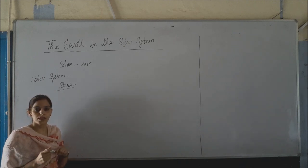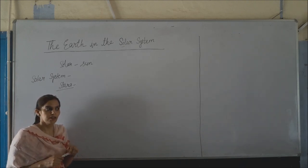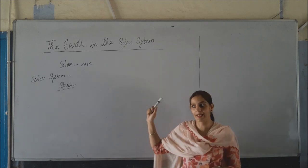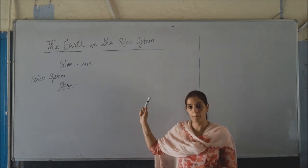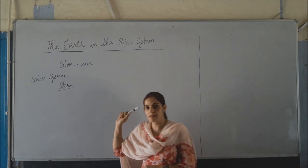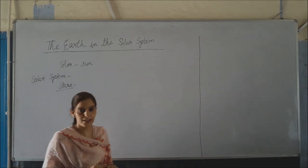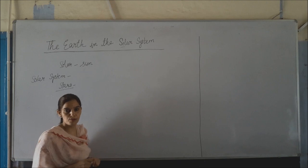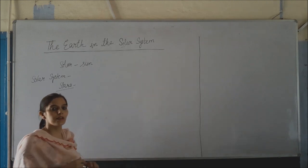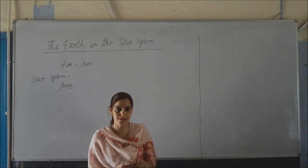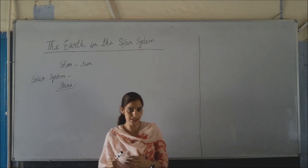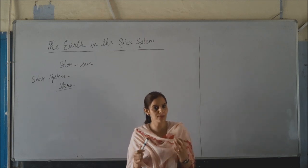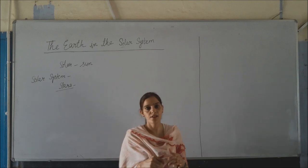Our sun is also a star. With countless sparkling stars in the sky, the sun is like one of them. But other stars appear very small to us. Do you know why? Because they are very far from us. That's why they look very small, very tiny in size.